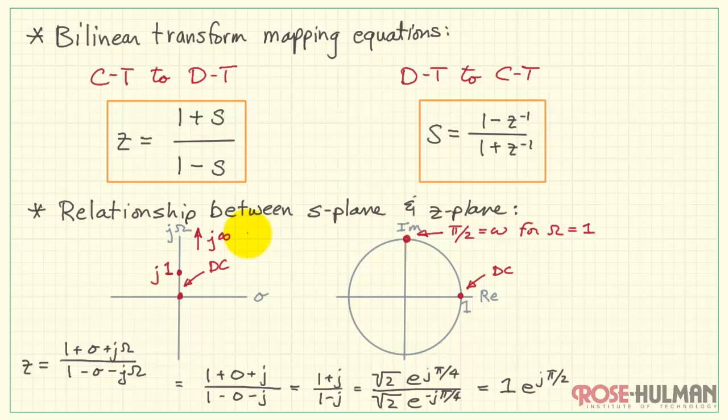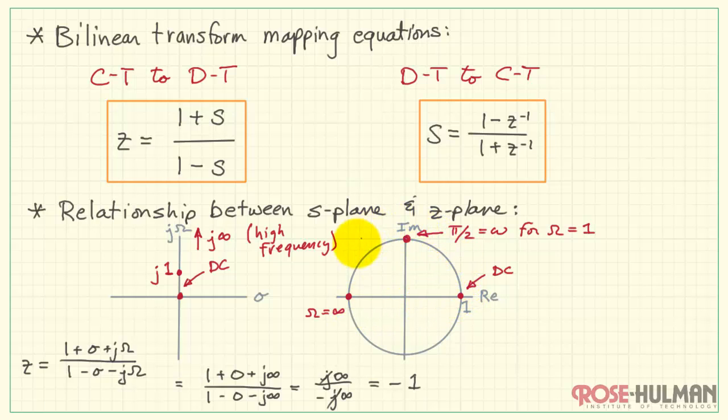Now, as we continue to travel along the j omega axis towards increasingly high frequency, ultimately getting us to j infinite value, let's see what happens. Omega's infinite value is clearly a lot larger than 1. The j's cancel, infinity divided by infinity is 1, and we're left with a sign. Evidently, we end up on this spot over here. So as we travel up the j omega axis, we eventually get to this frequency pi when capital omega is infinite.